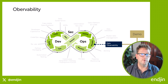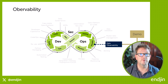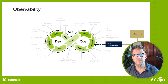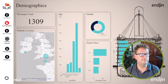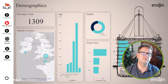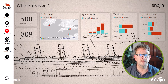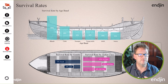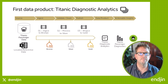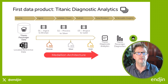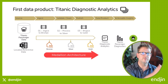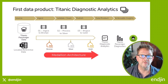In this video we're going to focus specifically on the observability of data engineering processes in Fabric. As a reminder, our goal for this data product is to create a Power BI report that allows users to interactively explore passenger data from the Titanic to understand patterns in survival rates. To achieve this goal we are adopting a medallion architecture to ingest, process and project the data by promoting it through the bronze, silver and gold areas of the lake.